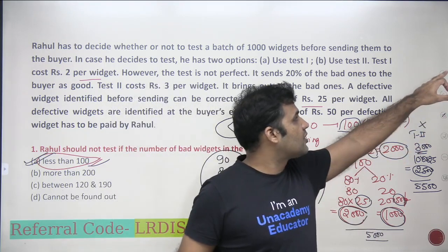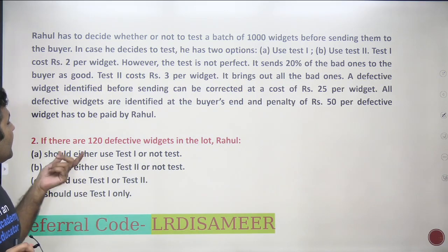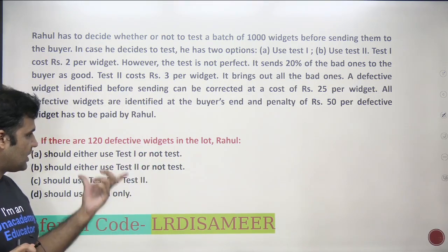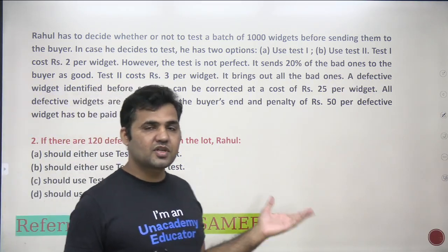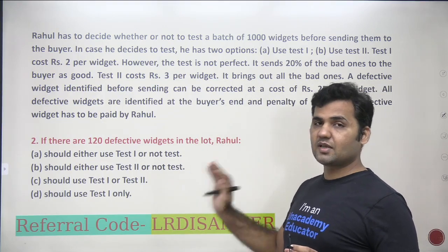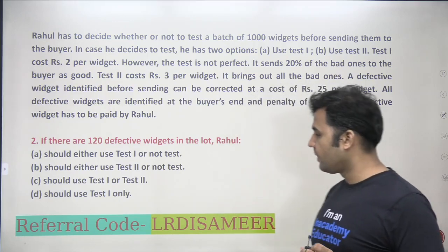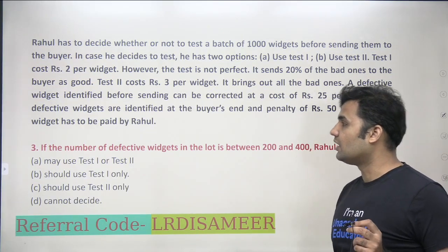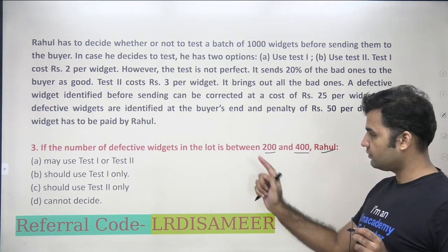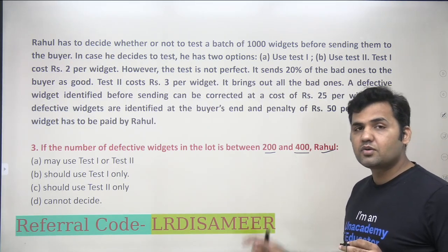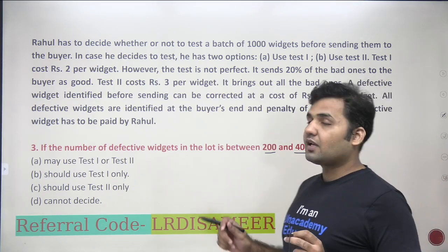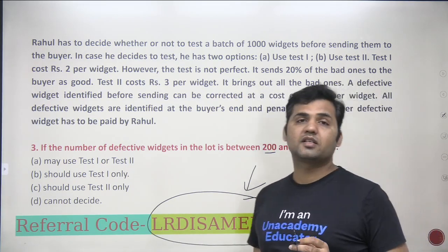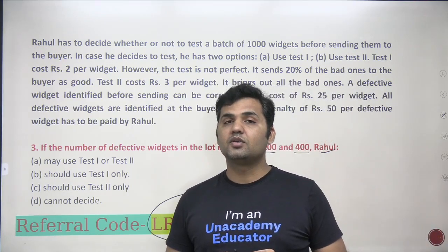Now for practice: Question 2 — if there are 120 defective widgets in the lot, should Rahul go for Test 1, Test 2, or no testing? Question 3 — if the number of defective widgets is between 200 and 400, what should Rahul do? Try both questions using the same method. The solutions will be discussed in the next video. I'm taking live classes on Unacademy for Logical Reasoning, Data Interpretation, and Quantitative Aptitude. Use my referral code LRDS to get 10% off on Unacademy Plus. Thank you!